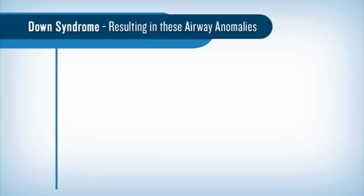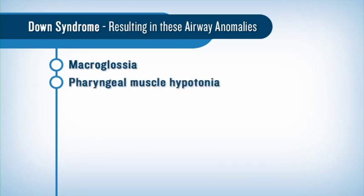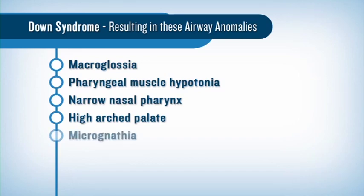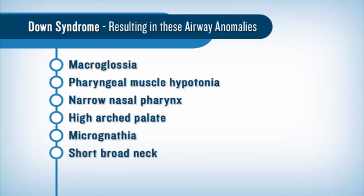In Down syndrome, also known as trisomy 21, the most important airway considerations may include macroglossia and pharyngeal muscle hypotonia, narrowed nasopharynx, high arch palate, micrognathia, a short broad neck, and small trachea. Keeping these airway features in mind, the endotracheal tube selected should be smaller than might otherwise be predicted. Careful laryngoscopy is required to minimize flexion or extension of the neck secondary to the possibility of atlantooccipital or atlantoaxial instability.